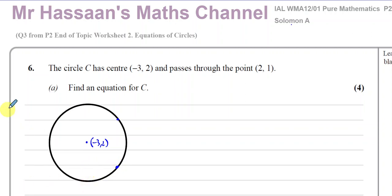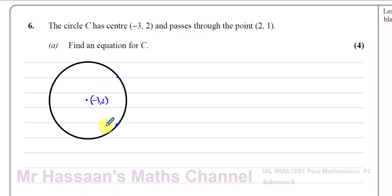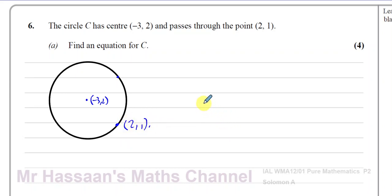If you think about this as an axis, then that's x. So 2, 1 will be somewhere over here. The center minus 3, 2 is here, and this point is on the circle. That means the distance between them is the radius.